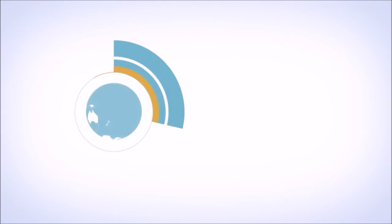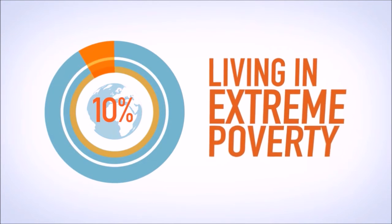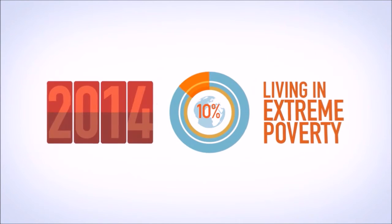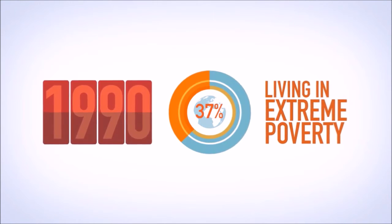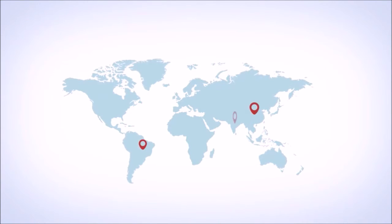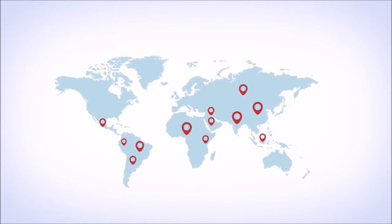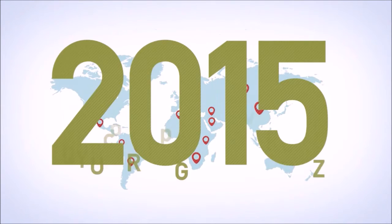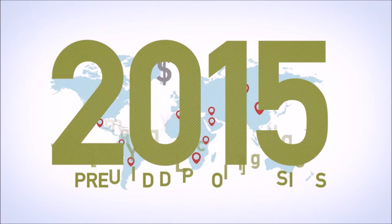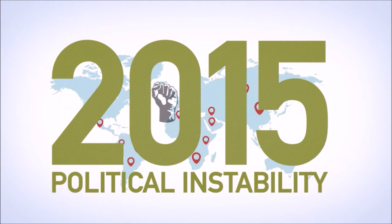For the first time in history, less than 10% of the world's population lives in extreme poverty — 25 years ago it was over a third. Emerging markets are still home to most of the world's poor, but the pace of change has been breathtaking. And that's important to remember after a year of falling trade volumes, depressed commodity prices, and political instability.